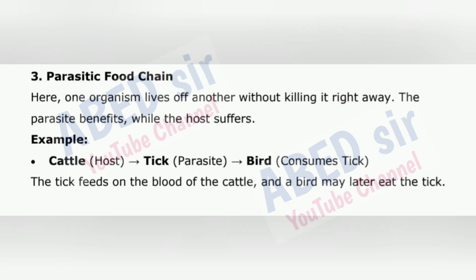3. Parasitic Food Chain: Here, one organism lives off another without killing it right away. The parasite benefits while the host suffers. Example: Cattle (host) → Tick (parasite) → Bird (consumes tick). The tick feeds on the blood of the cattle, and a bird may later eat the tick.